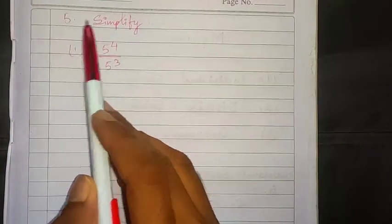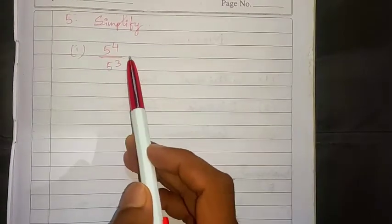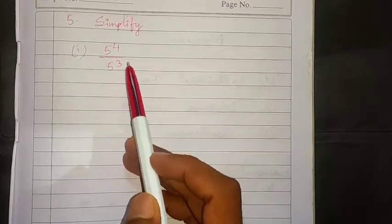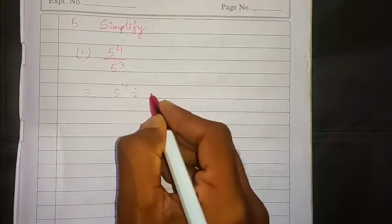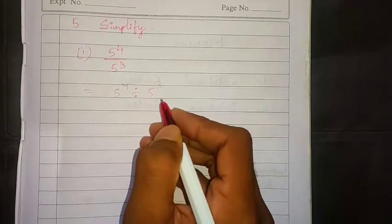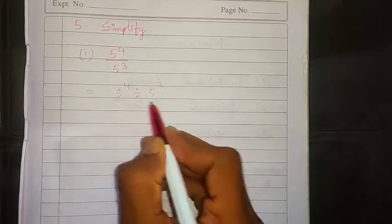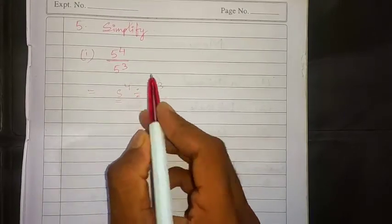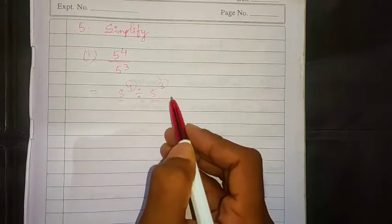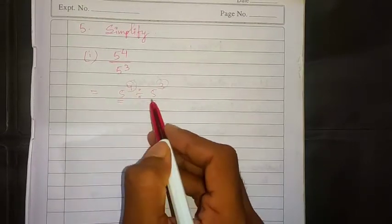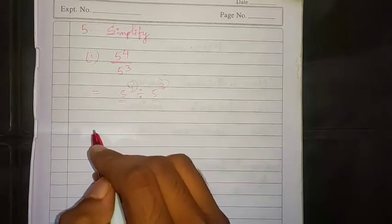Let us do number 5: Simplify 5 raised to 4 divided by 5 raised to 3. In your previous question I have taught you when bases are same and if they are multiplied, their power is added. But when bases are same and they are divided, their power is subtracted.